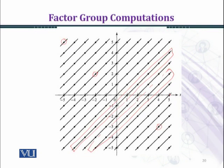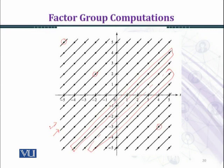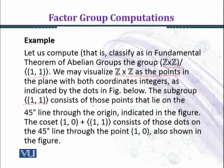Similarly, (4,0) plus H and (5,0) plus H are further lines below. In the other direction, minus one (0) plus H is a line above the subgroup H, and minus two (0) plus H is the line above the coset minus one (0) plus H. Minus three (0) plus H continues in the same manner. All cosets lie on forty-five degree lines.